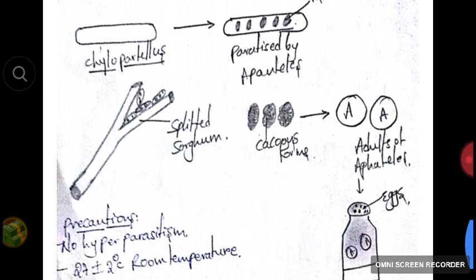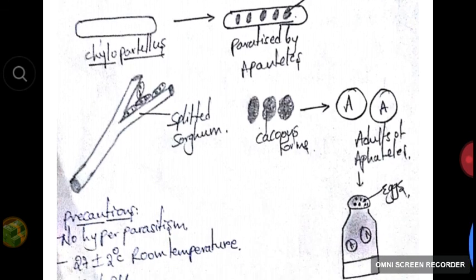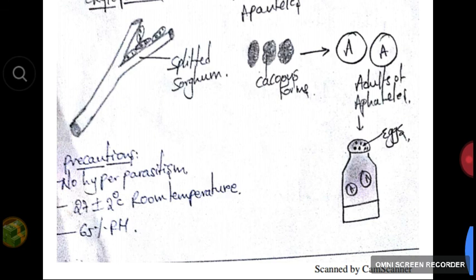Here is the diagrammatic representation. Chylopateles is parasitized by Apantheles, placed on sorghum, cocoons are formed, and adults emerge. We take them into a jar, and eggs are laid on the black cloth. Precautions: no hyperparasitism should occur. Room temperature should be maintained at 27 plus or minus 2 degrees Celsius, and relative humidity should be maintained at 60 percent.